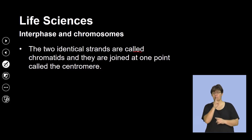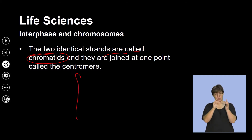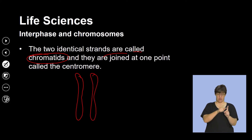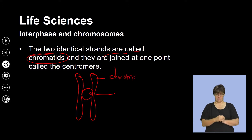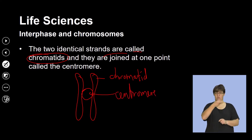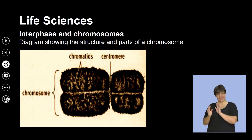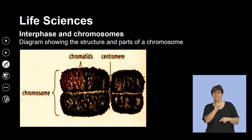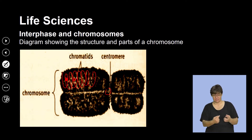The two identical strands are called chromatids, and they are joined at one point by a structure called the centromere. So we have one chromatid and another chromatid held together by the centromere. These two are identical to each other — basically DNA wrapped around histone proteins. An illustration of a chromosome clearly shows the chromatin network wrapped around histone proteins and held together by the centromere.